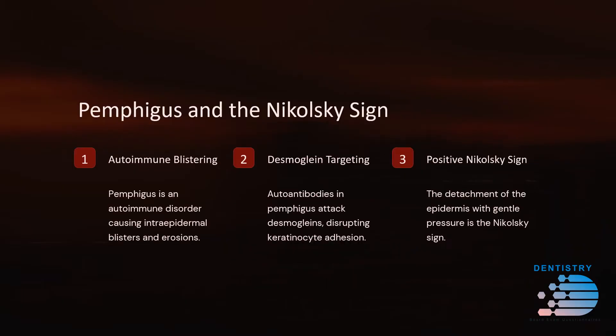Pemphigus and the Nikolsky sign. First, autoimmune blistering: pemphigus is an autoimmune disorder causing intra-epidermal blisters and erosions. Second, desmoglin targeting: autoantibodies in pemphigus attack desmoglins, disrupting keratinocyte adhesion. Finally, positive Nikolsky sign: the detachment of the epidermis with gentle pressure is the Nikolsky sign.